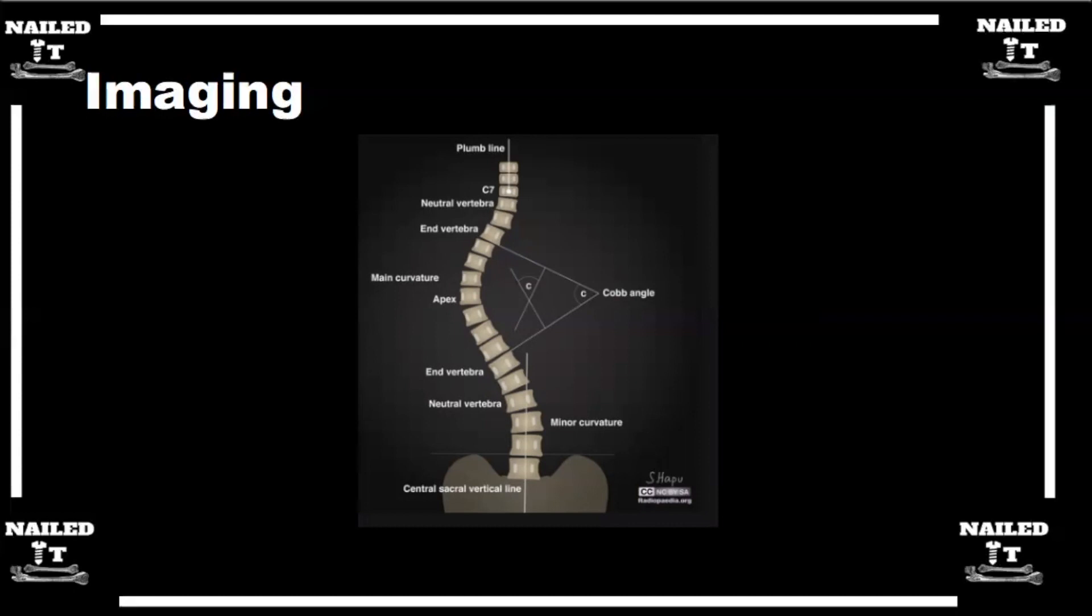What are some of the other terminology or things that we should know as far as when we're looking at these scoliosis films, like the end vertebra and apex? The apex is easy. If you've drawn that Cobb angle already, the apex is the one that is most deflected from the midline, from center sacral vertical line. Pick the vertebra that is the farthest away from the center sacral vertical line. That's the apex of the curve.